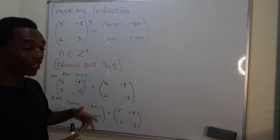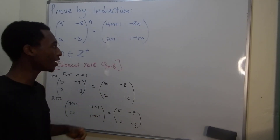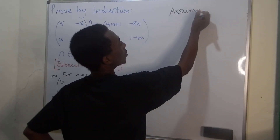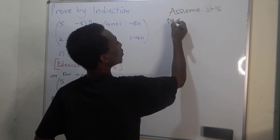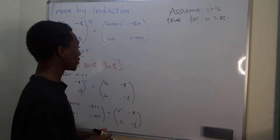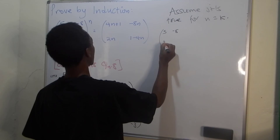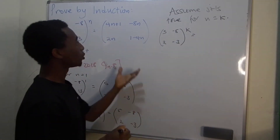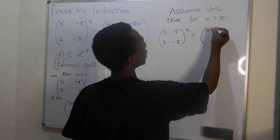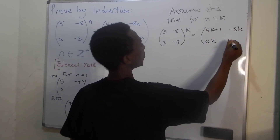Now let's go to the induction hypothesis, where we choose an arbitrary value of n and assume that it's going to be true for that value. So let's assume it's true for n equals k. Then we'll have [5, -8, 2, -3] to the power k equal to the matrix: 4k+1, -8k, 2k, 1-4k.